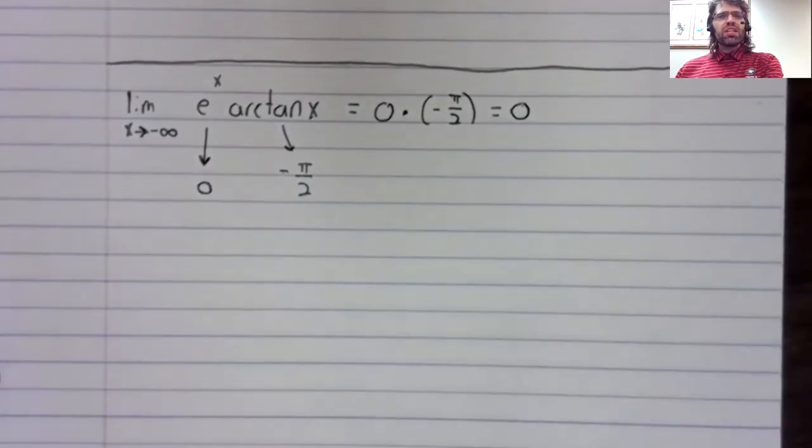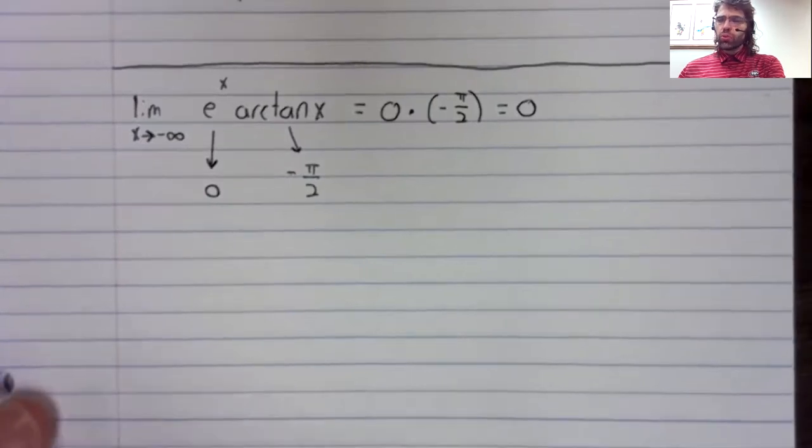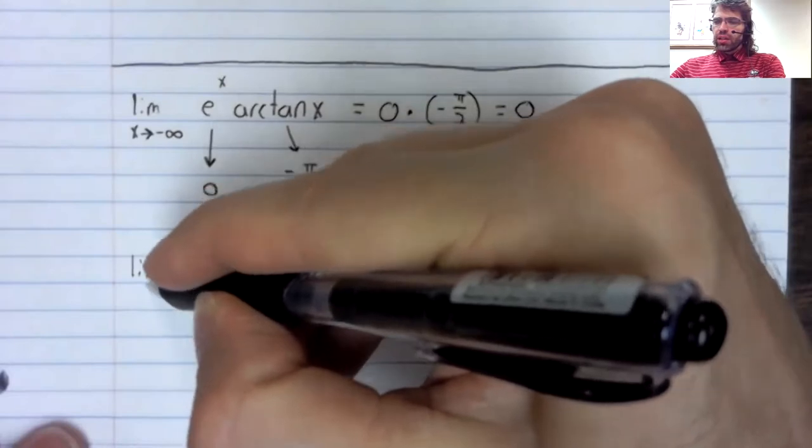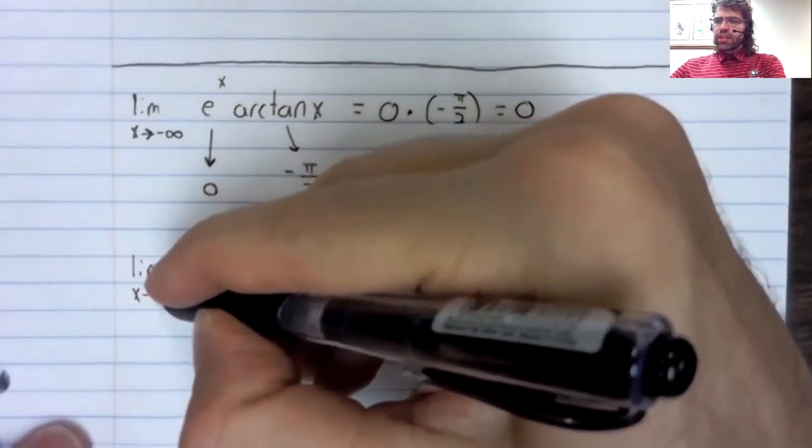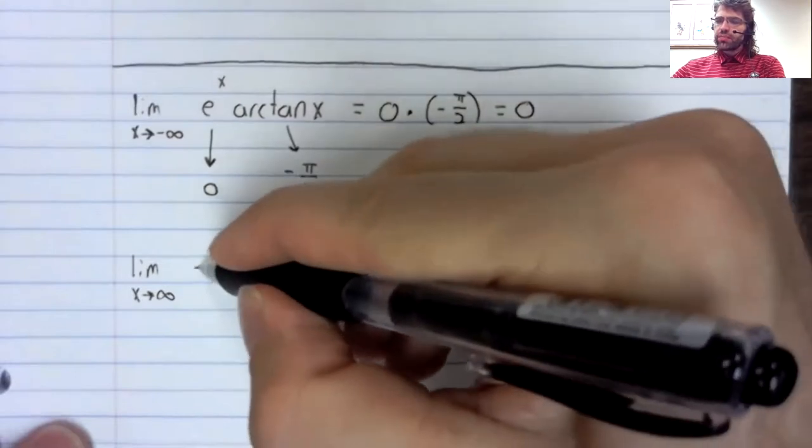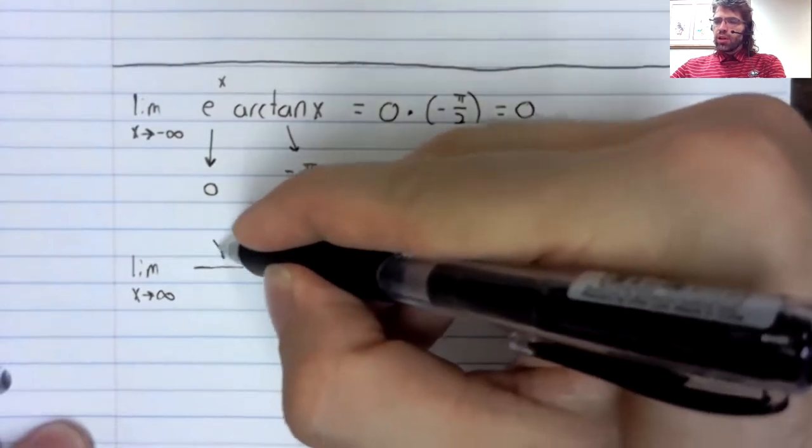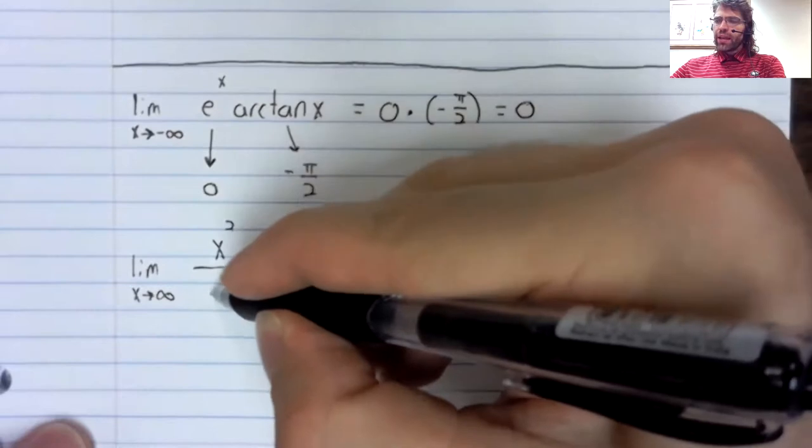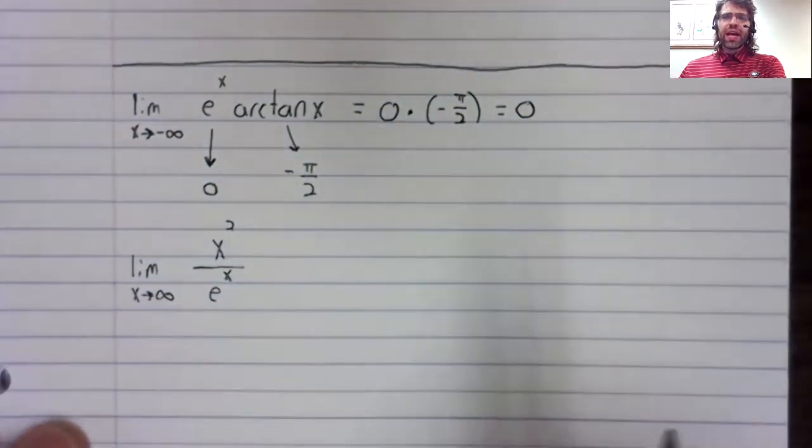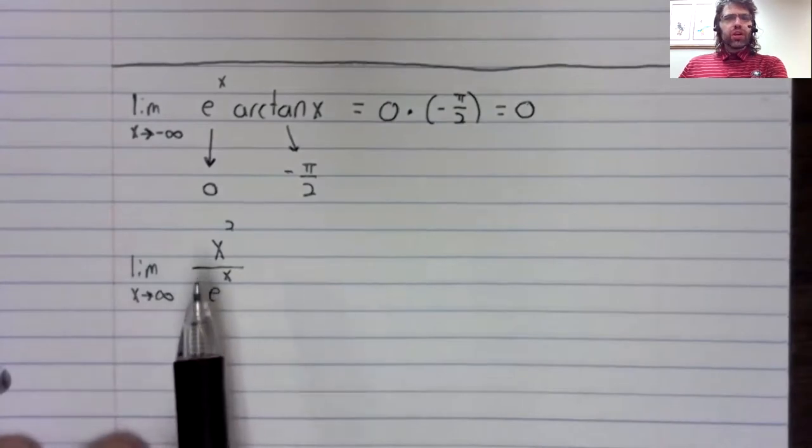We have to be careful, though, because it frequently occurs that individual limits don't exist. Like if I wanted the limit as x goes to infinity of x² divided by e to the x—this is a quotient,